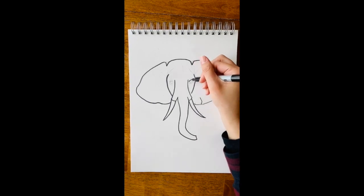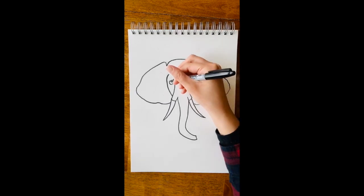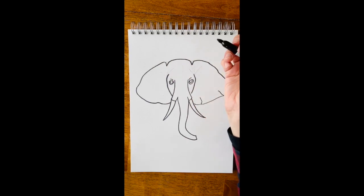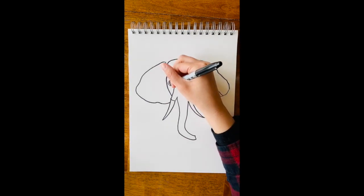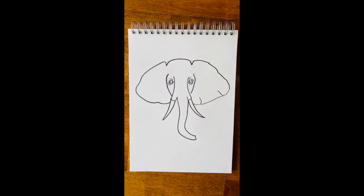For the eyes, we're going to just do little curve lines. And then we're going to connect the bottom. So kind of an oval shape. And then you can go ahead and put the iris in. So another little oval shape in the center. And I'm just doing these little lines around the face because elephants have lots of wrinkles all over. So I'm just adding some around the eyes.